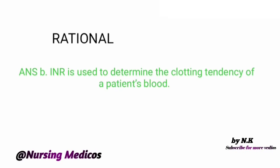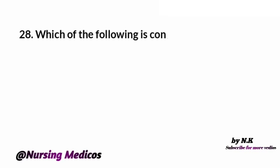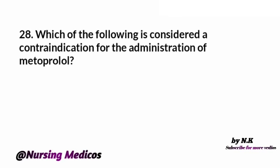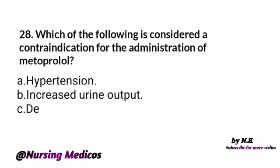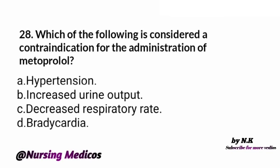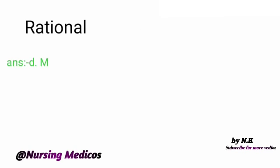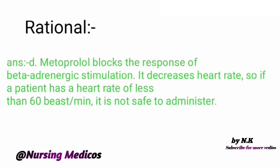Question 28: Which of the following is considered a contraindication for giving metoprolol? A) Hypertension, B) Increased urine output, C) Decreased respiratory rate, D) Bradycardia. Answer is D, bradycardia. The rationale is metoprolol blocks the response of beta-adrenergic stimuli and decreases heart rate, so if a patient has a heart rate of less than 60 beats per minute, it is contraindicated.